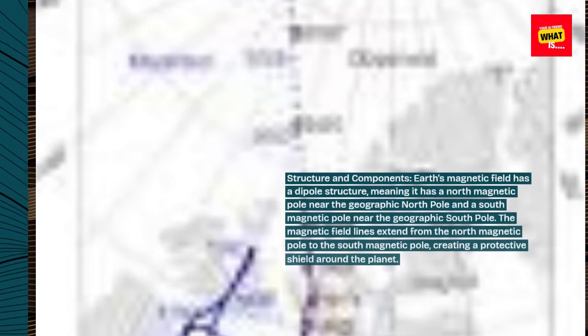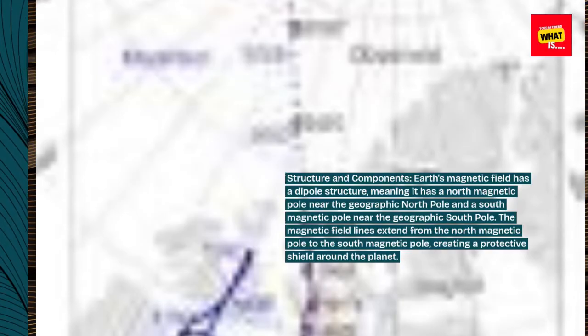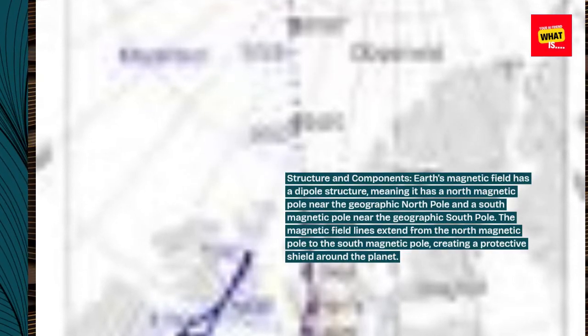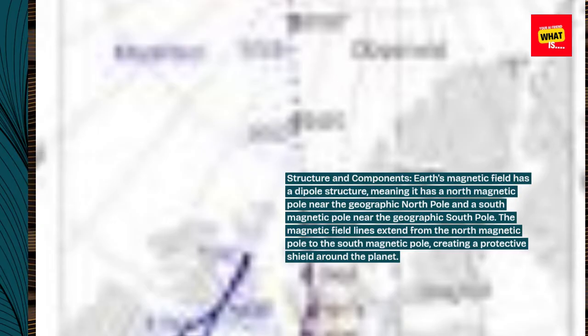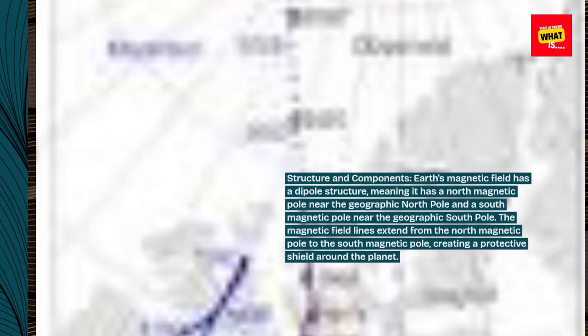Structure and Components: Earth's magnetic field has a dipole structure, meaning it has a north magnetic pole near the geographic north pole and a south magnetic pole near the geographic south pole. The magnetic field lines extend from the north magnetic pole to the south magnetic pole, creating a protective shield around the planet.